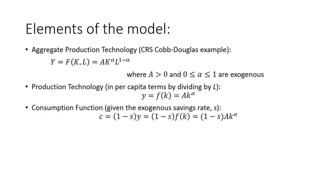We're going to have a very simple consumption function. Given an exogenous savings rate s, consumption is just the percentage of income that we don't save, which is one minus s times y. We can then plug in the functional form of the production function to get consumption as a function of capital if needed.